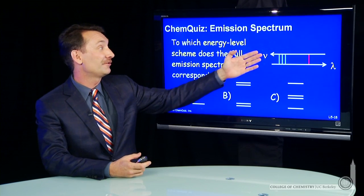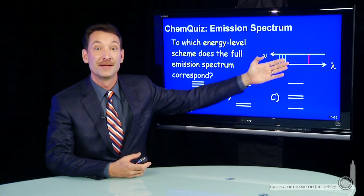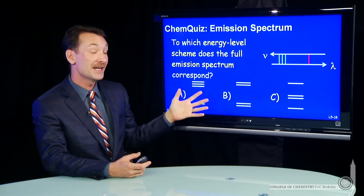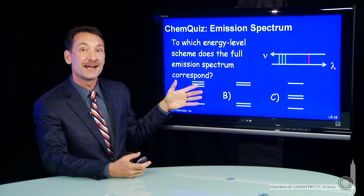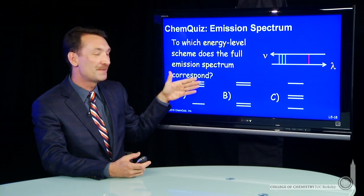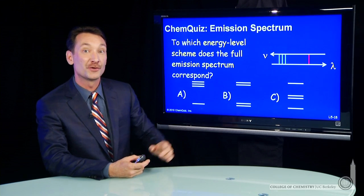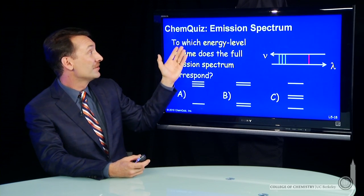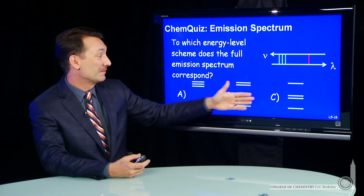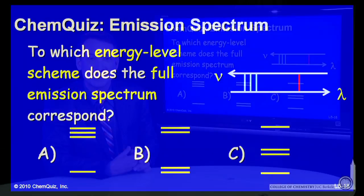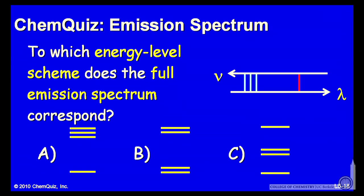Let's look at an energy level spectrum, so some energy that's emitted or absorbed from a system, and try to predict what the electronic structure, what the spacings are in that actual system of matter, so the reverse of what we did last time. So to which energy level scheme, A, B, or C, does this emission spectrum correspond? Think about that for a minute and make a selection.